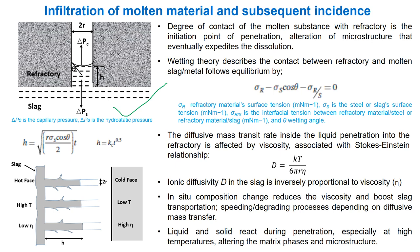In the schematic, h is molten material penetration height, theta is the wetting angle, ΔPc is the capillary pressure, ΔPs is the hydrostatic pressure, and r is the pore diameter. The wetting theory describes the contact between refractory and molten slag metal following equilibrium by this equation.